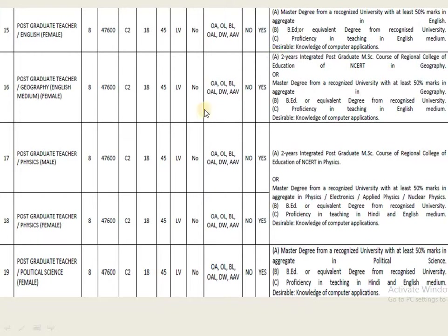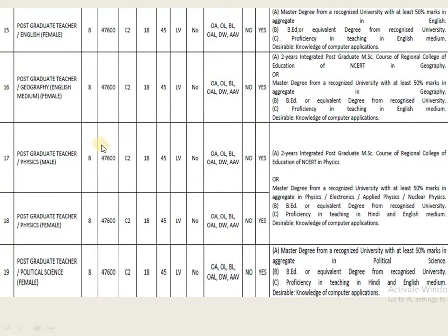The next post is Post Graduate Teacher in Physics, open to both male and female candidates. Candidates must have completed a Master's degree in Physics, Electronics, Applied Physics, or Nuclear Physics along with BEd. The salary is 47,600 and the age range is 18 to 45.